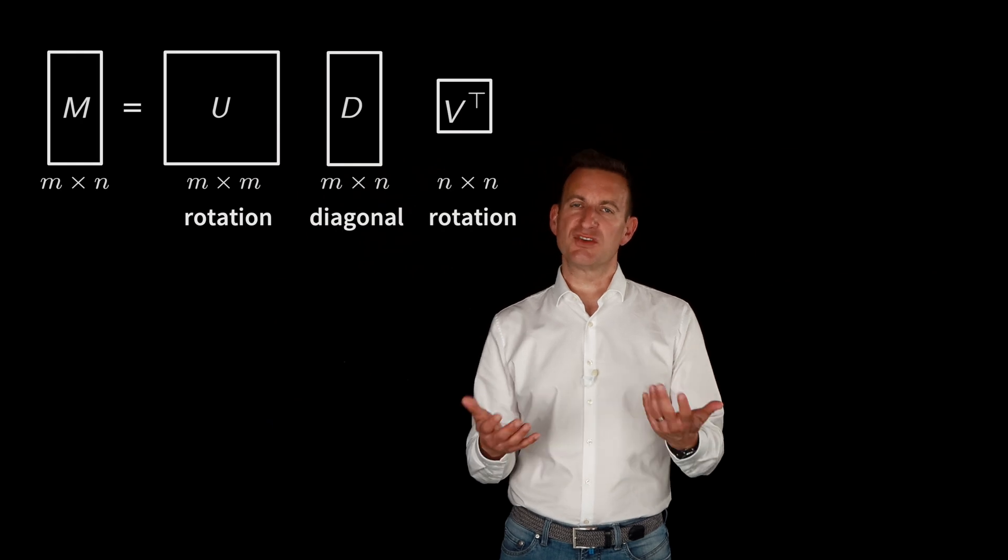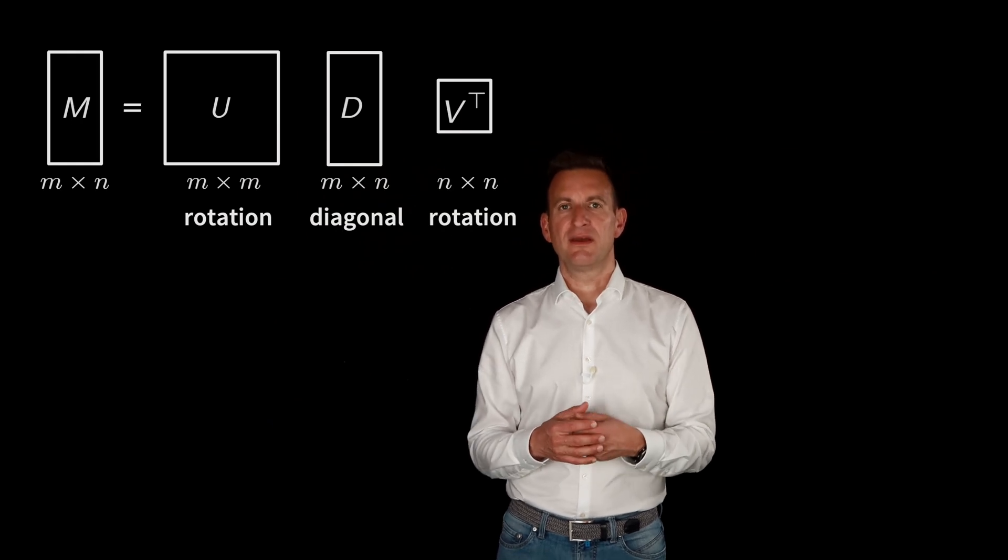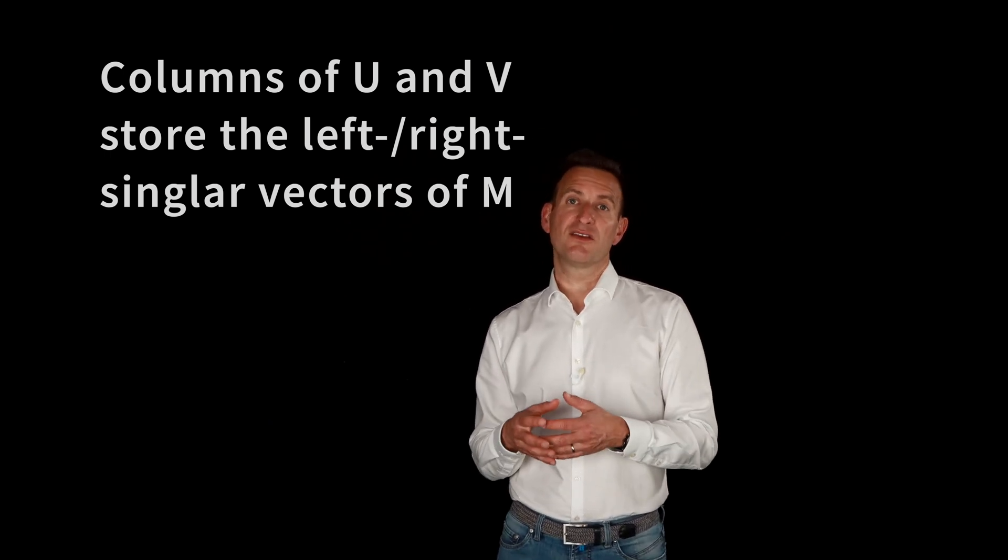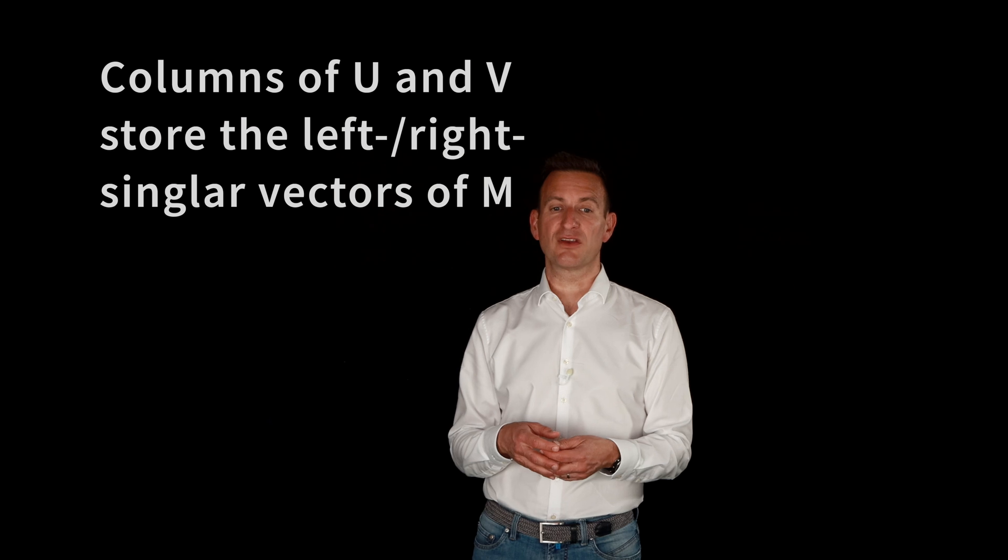And then we have the matrix V, which is again a rotation matrix. And the columns of U and V compute the left and right singular vectors of my original matrix M.